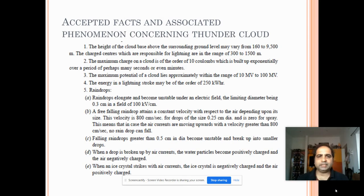So next point is lightning. Some of the accepted facts and associated phenomenon considering thundering clouds are: the height of the cloud should be between 160 to 9500 meters. The charge centers which are responsible for lightning are in the range of 300 to 1500 meters. The maximum charge on a cloud is of the order of 10 coulombs and exponentially increases over a period of perhaps many seconds or minutes. The maximum potential of a cloud lies approximately within the range of 10 megavolts to 100 megavolts. The energy in the lightning stroke may be of the order of 250 kilowatt hour.